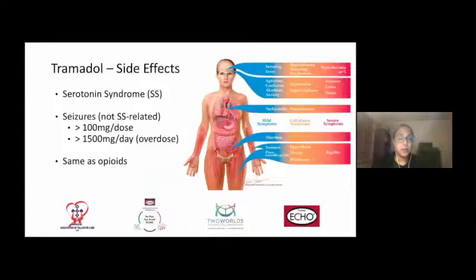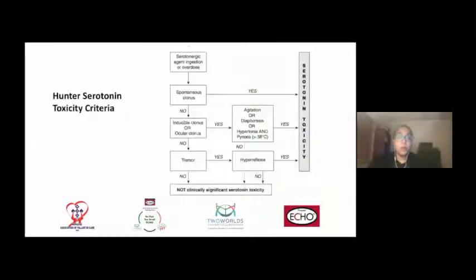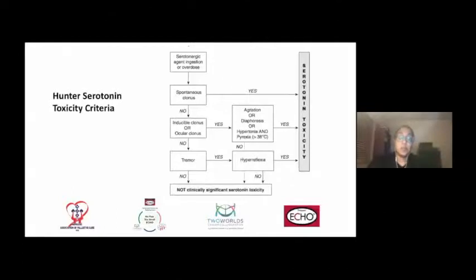Tramadol also has side effects similar to those of opioids. As it has effects on the mu receptors within the body, the same side effects such as constipation, drowsiness, nausea and vomiting may be potential side effects with tramadol. One thing to remember is the Hunter serotonin toxicity criteria — an algorithm that can be used to identify whether or not a patient is experiencing serotonin syndrome. This is helpful to refresh everyone's memory, as we may not be thinking about this while utilizing tramadol for pain relief, but it is important to consider because of the serotonergic properties of tramadol.